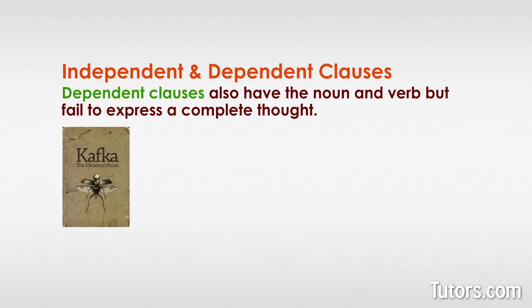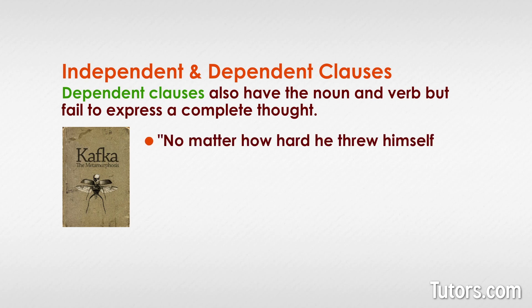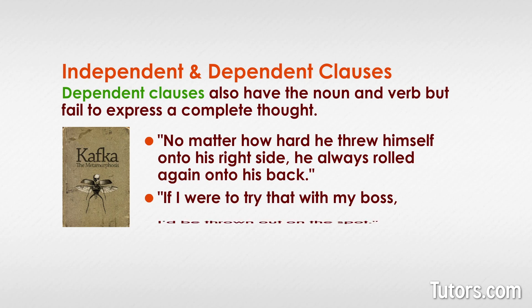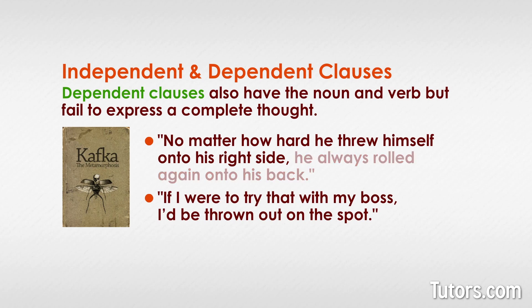Dependent clauses also have the noun and verb but fail to express a complete thought. In these sentences penned by Kafka, the dependent clauses are underlined. No matter how hard he threw himself onto his right side, he always rolled again onto his back. If I were to try that with my boss, I'd be thrown out on the spot. If all Kafka had written was, 'no matter how hard he threw himself onto his right side,' you would have no idea what was happening to the character.